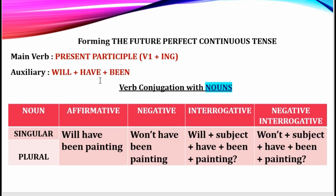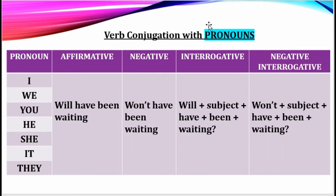'Will Ram have been painting?' It really raises a question — is it a correct sentence? Of course it is; it is the only correct form of using it. And with pronouns it is like this only: I, we, you, he, she, it, they — 'will have been waiting.' Negative: 'won't have been waiting.'